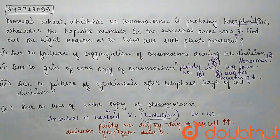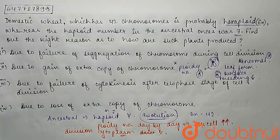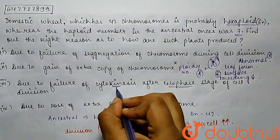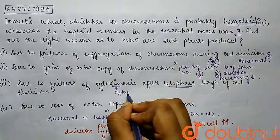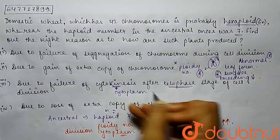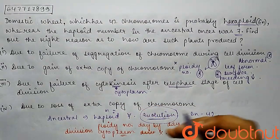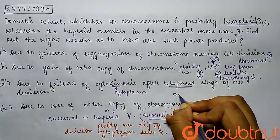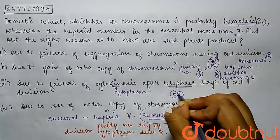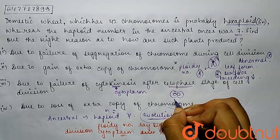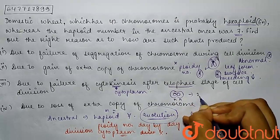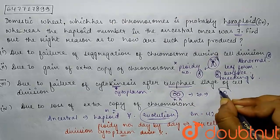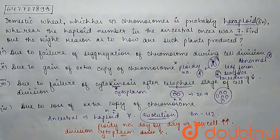Next is: due to failure of cytokinesis after the telophase stage of cell division. So basically, when the telophase stage comes in cell division, cytokinesis normally divides the cell into two different cells. When cytokinesis is absent, the number of chromosomes increases. The nucleus divides, but the cytoplasm remains the same. What happens is haploid plus haploid gives diploid — generation after generation, cytokinesis fails and the nucleus keeps increasing, so the ploidy number increases.